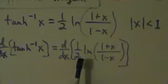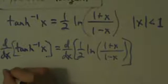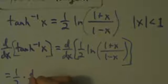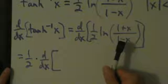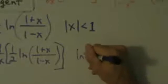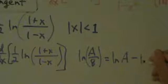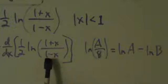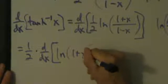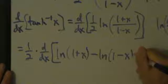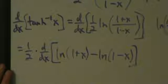The 1/2 is just a constant, so we can pull it out of the derivative. We have 1/2 times d/dx of the natural log of (1+x)/(1−x). Now remember the rule that natural log of a over b equals natural log of a minus natural log of b. So a is 1 plus x and b is 1 minus x, and we expand this into natural log of (1+x) minus natural log of (1−x). That's a property of logs from pre-calc.